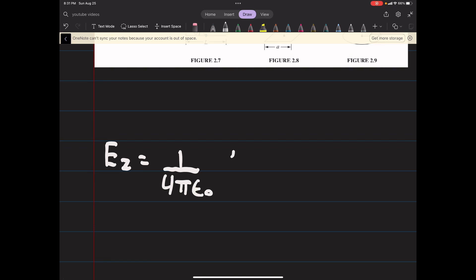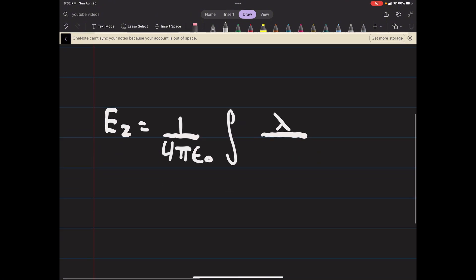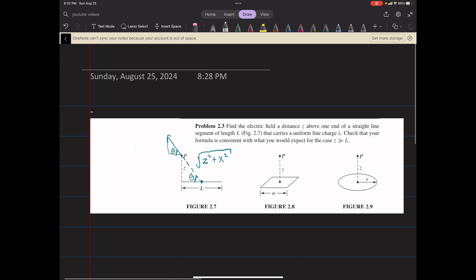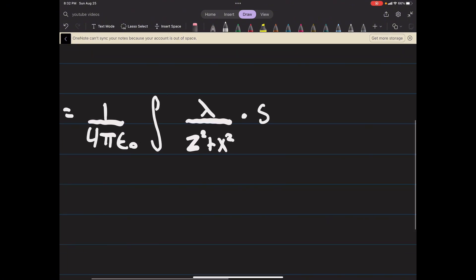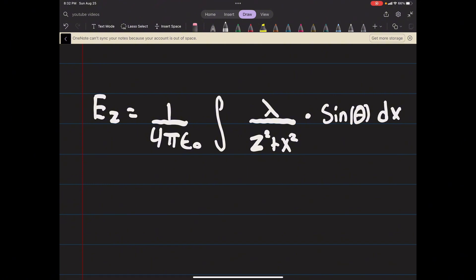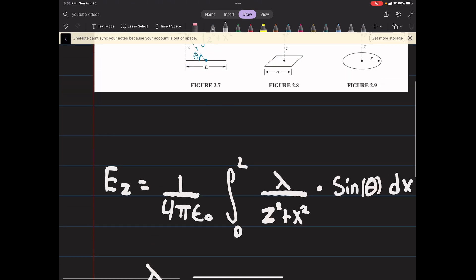Ez is going to be 1 over 4 pi epsilon not, the integral lambda over r squared, so z squared plus x squared. Now we're going to multiply by sine theta to get the z component, and we're going to integrate over that line segment dx from 0 to L. Lambda can come out, that's just a constant.